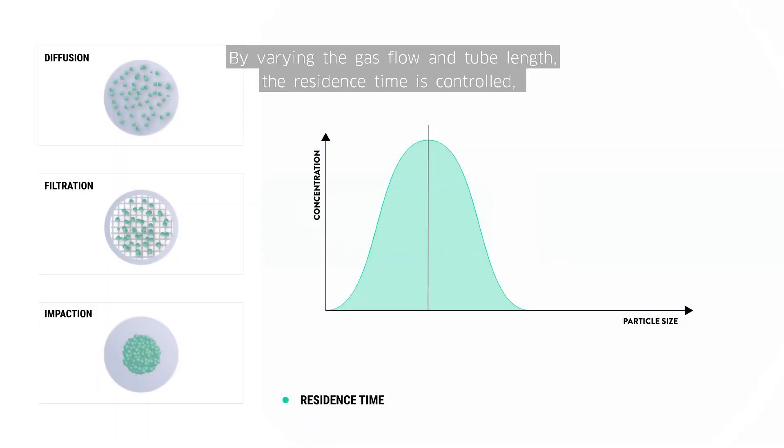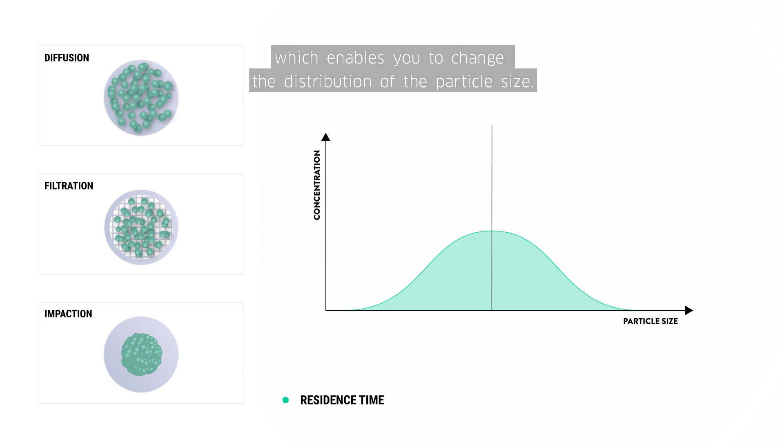By varying the gas flow and tube length, the residence time is controlled, which enables you to change the distribution of the particle size.